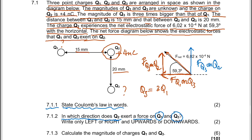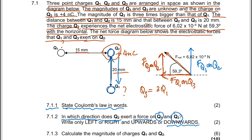The upward force in the diagram is the force of Q2.3 on Q2.2. By Newton's third law, the force of Q2.2 on Q2.3 is in the opposite direction — downwards. Similarly, the force of Q2.1 on Q2.2 is to the left, so the force of Q2.2 on Q2.1 must be to the right — opposite directions in each case.